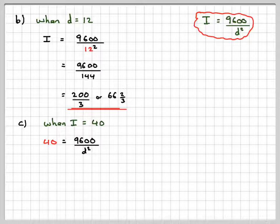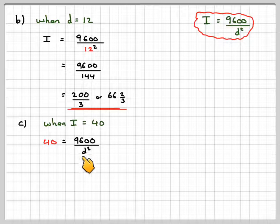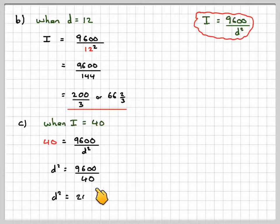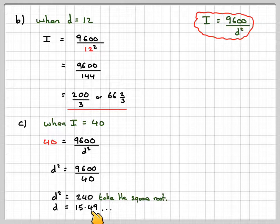When I is equal to 40, we get that 40 is 9,600 over D squared. We now have to make D squared the subject. We do that by taking this up here and this down here. So we get that D squared is 9,600 over 40. That gives me that D squared must be 240. We've got D squared. We want to find D. D is actually a distance, so we can't take the negative square root. We just take the square root. So we get that D is equal to 15.49, which rounded to 3 significant figures is 15.5.